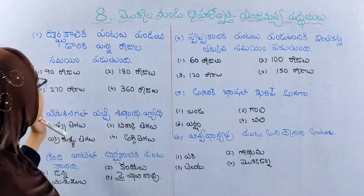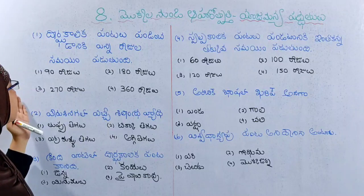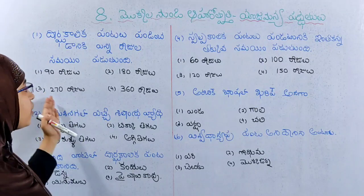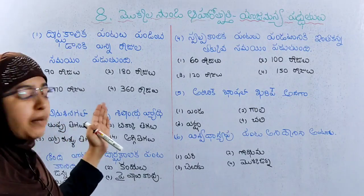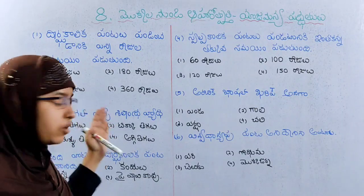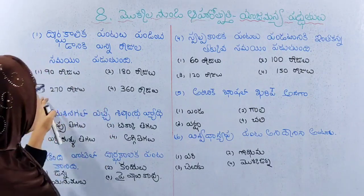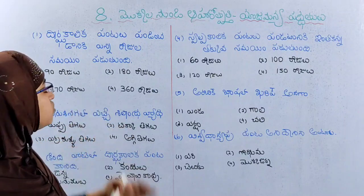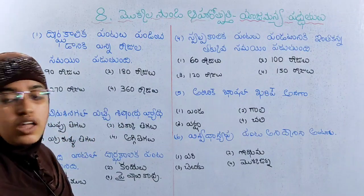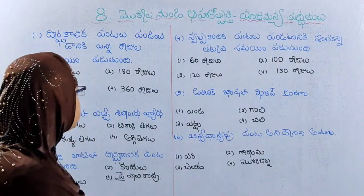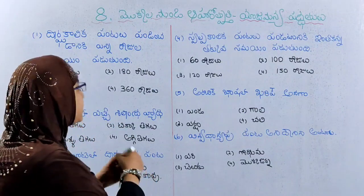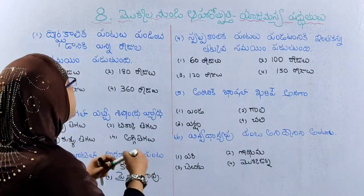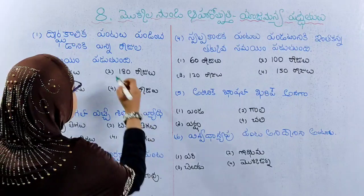What time do you have to learn? Option 1 is 7 days. Option 2 is 8 days. Option 3 is 8 days. Option 4 is 8 days. The correct answer is that I am alone.